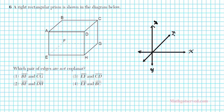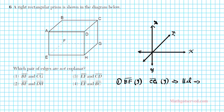Let's look at option 1: BF and CG. Segment BF is going in the Y direction, and segment CG is also going in the Y direction. That implies they're parallel, and since they're parallel, that implies they're coplanar. If they're going in the same direction of an axis, they're coplanar because they're parallel. For option 2, BF is going in the up-and-down direction of the Y axis, and segment DH is also going up and down in the Y direction. So those two segments are parallel, which means they're coplanar.